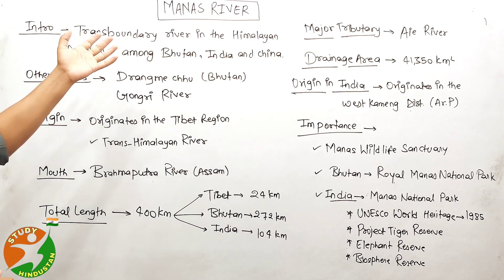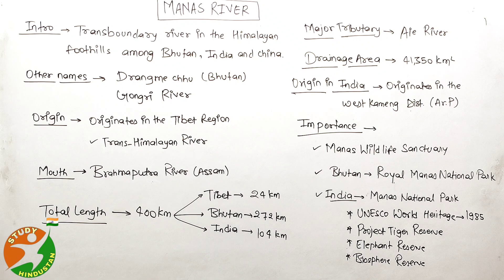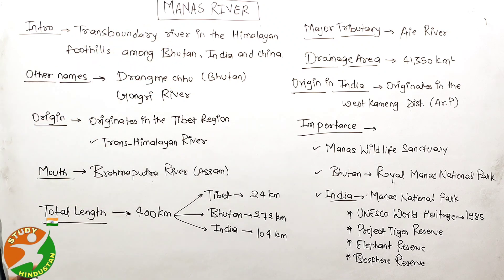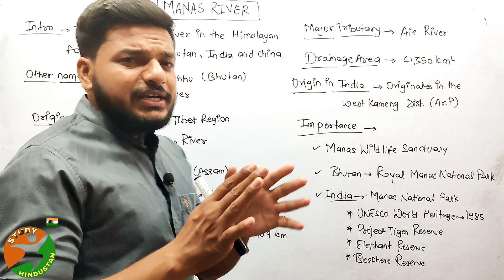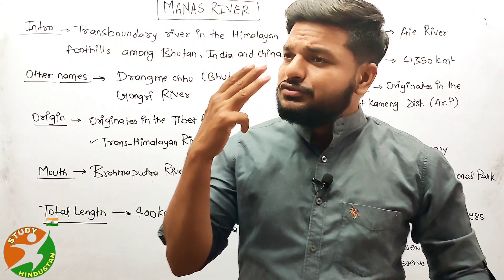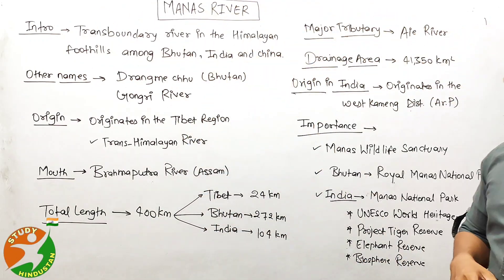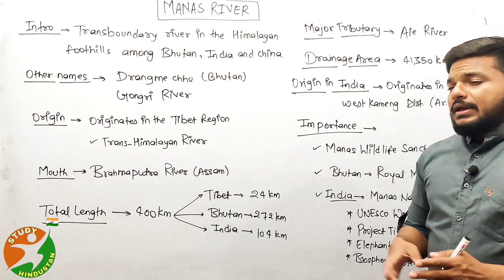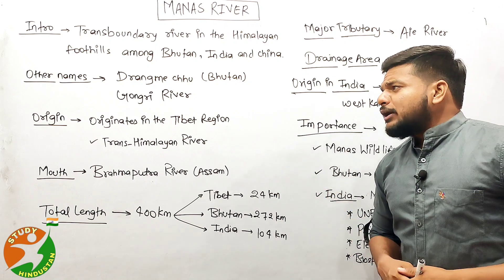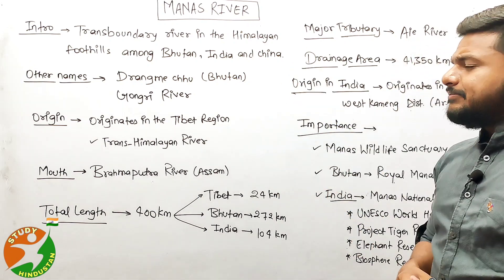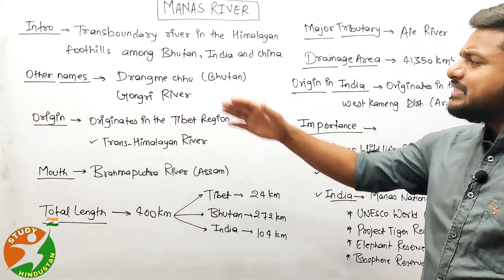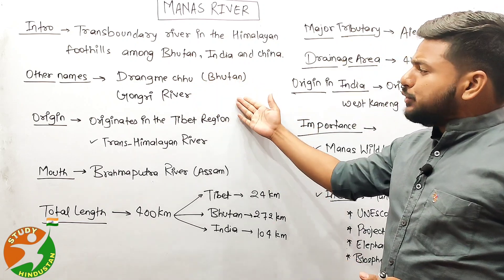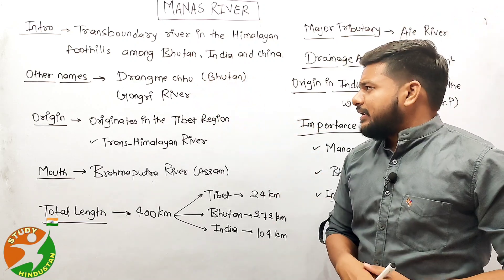The Manas River is a trans-boundary river in the Himalayan foothills among three countries: Bhutan, India, and China. The other names of the Manas River are Drangme Chu in Bhutan and also the Gongri River.